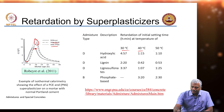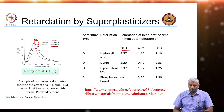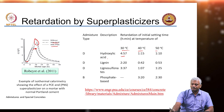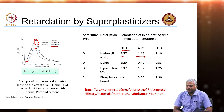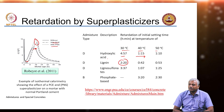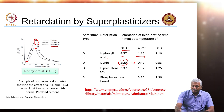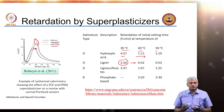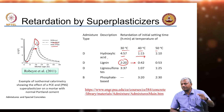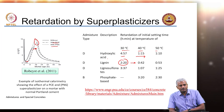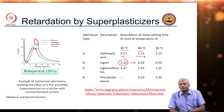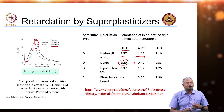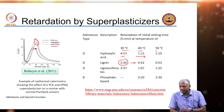At different temperatures, the relative effect of superplasticizers and retarders can be quite different. For instance, hydroxycarboxylic acid causes retardation of 4 hours 57 minutes at 30°C, but only 1 hour 15 minutes at 40°C. Lignosulfonate causes about 2 hours 20 minutes retardation of initial set at 30°C, but a major reduction at 40°C. This shows that retarders may not have the same effectiveness at different temperatures, so project planning must account for these issues by using the right kind of retarders at the right dosages.